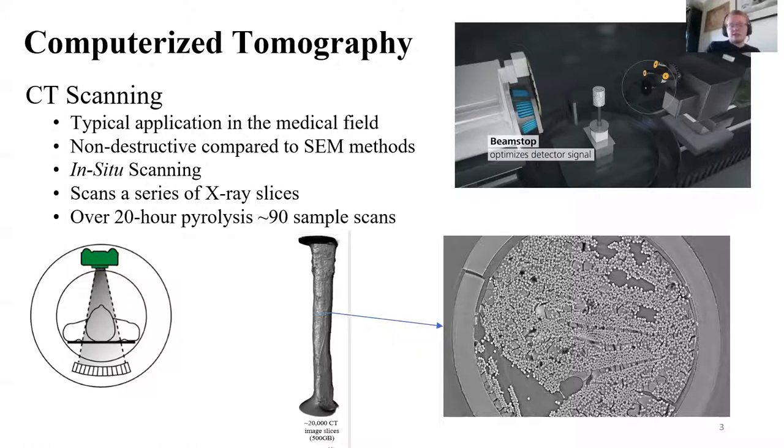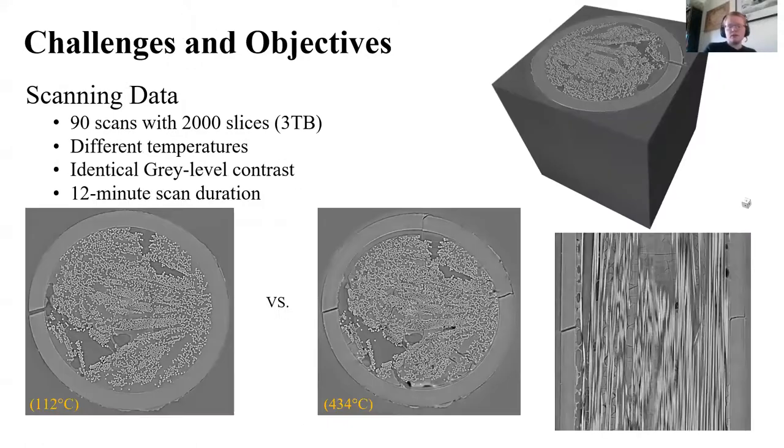While CT scanning is great, it's non-destructive, and can be used during the process of pyrolysis, it also provides its own unique set of challenges. With these 90 datasets, around 2,000 image slices each, it produces a lot of data, around 3 terabytes of it. You're never going to manually sift or analyze 3 terabytes of data, not even with a potential army of undergrads.